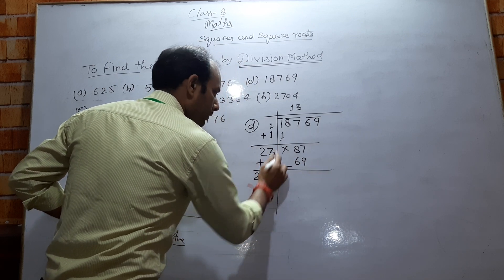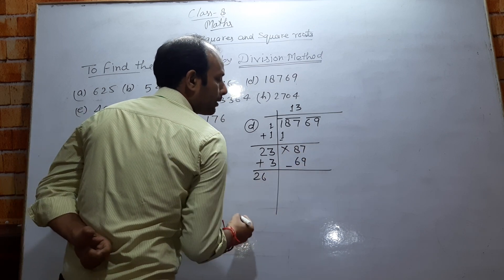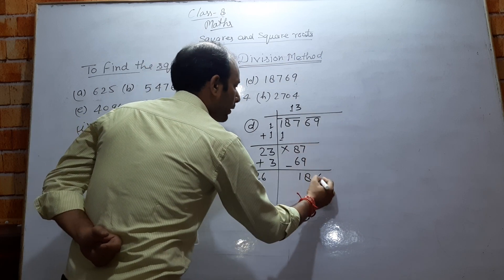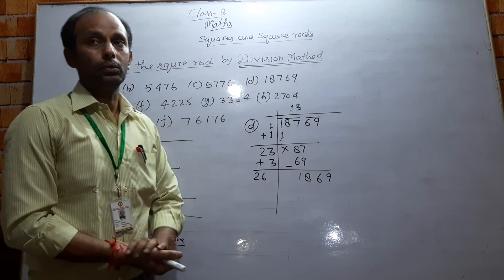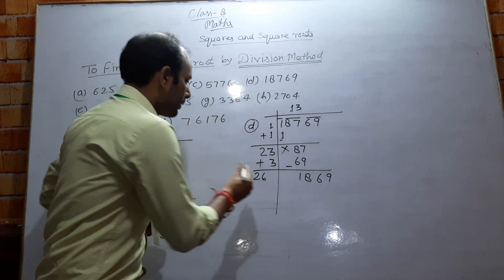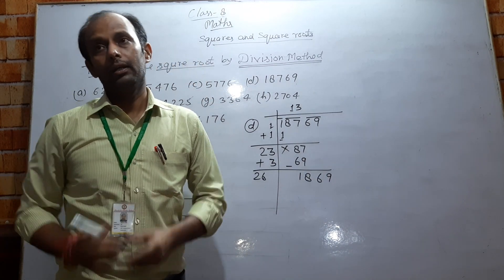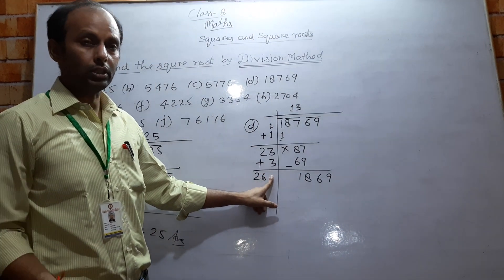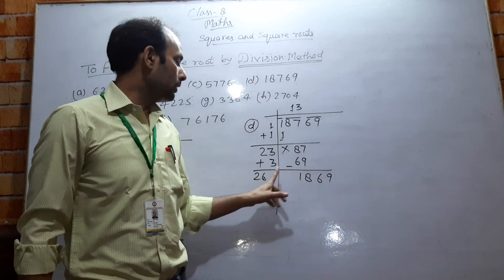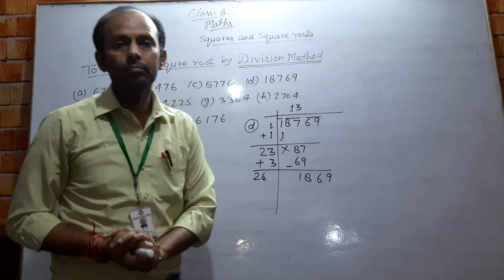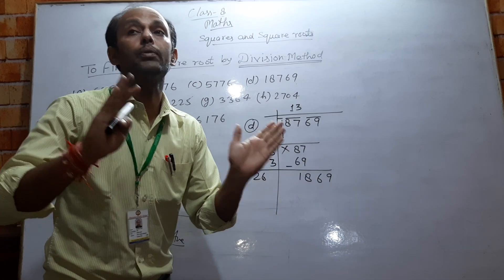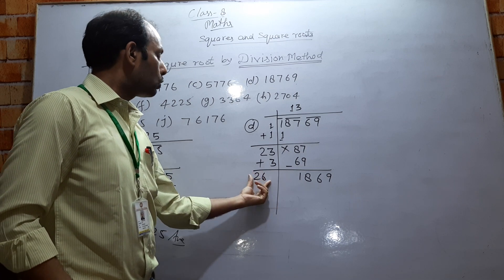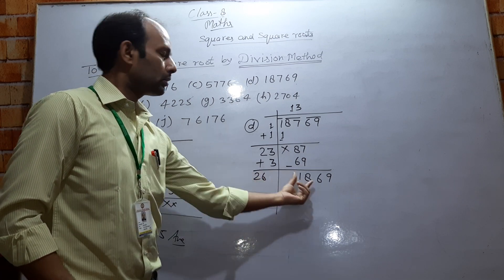Now let's add and subtract. 70 minus 9 — how much? 70 minus 9 is 61. Next pair: when the division is complete, what is the unit digit? The unit digit is 9. If the unit digit of the square is 9, then the unit digit of the square root is either 3 or 7.